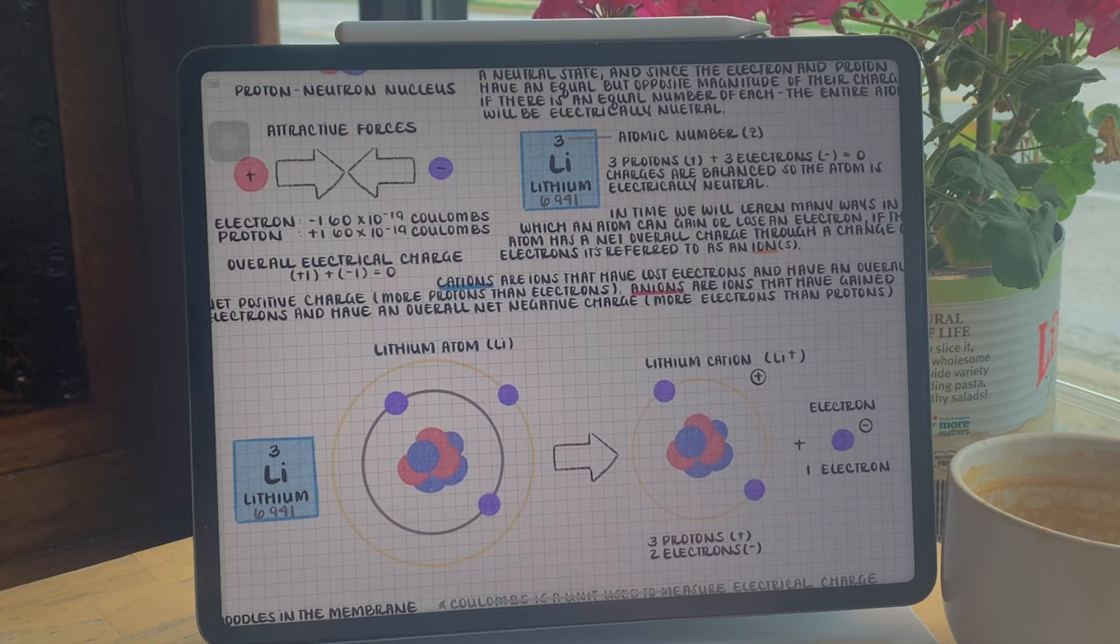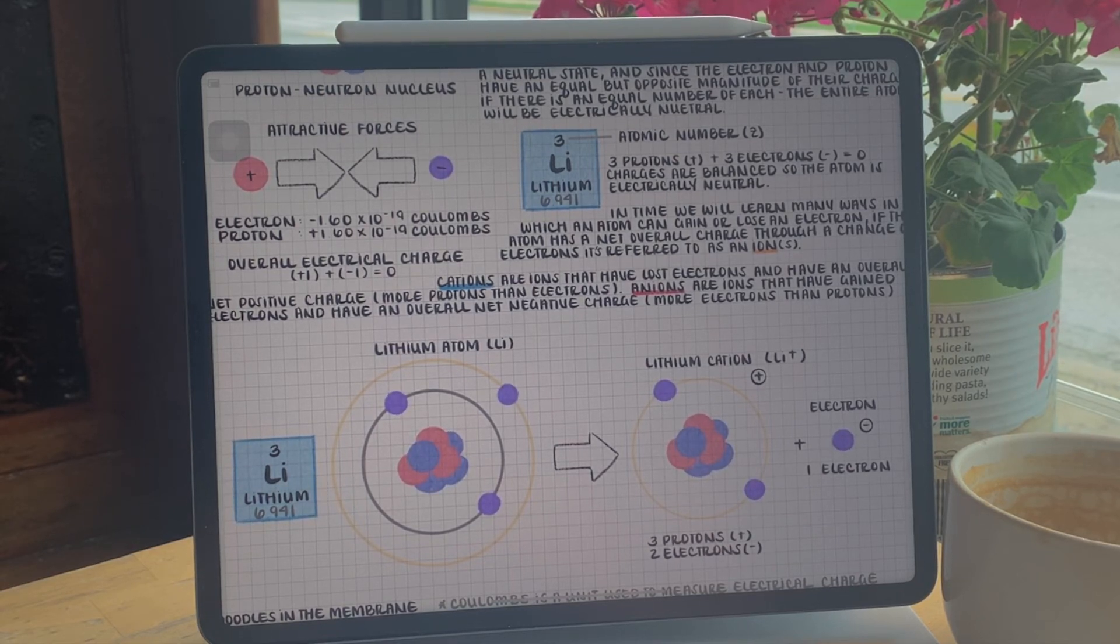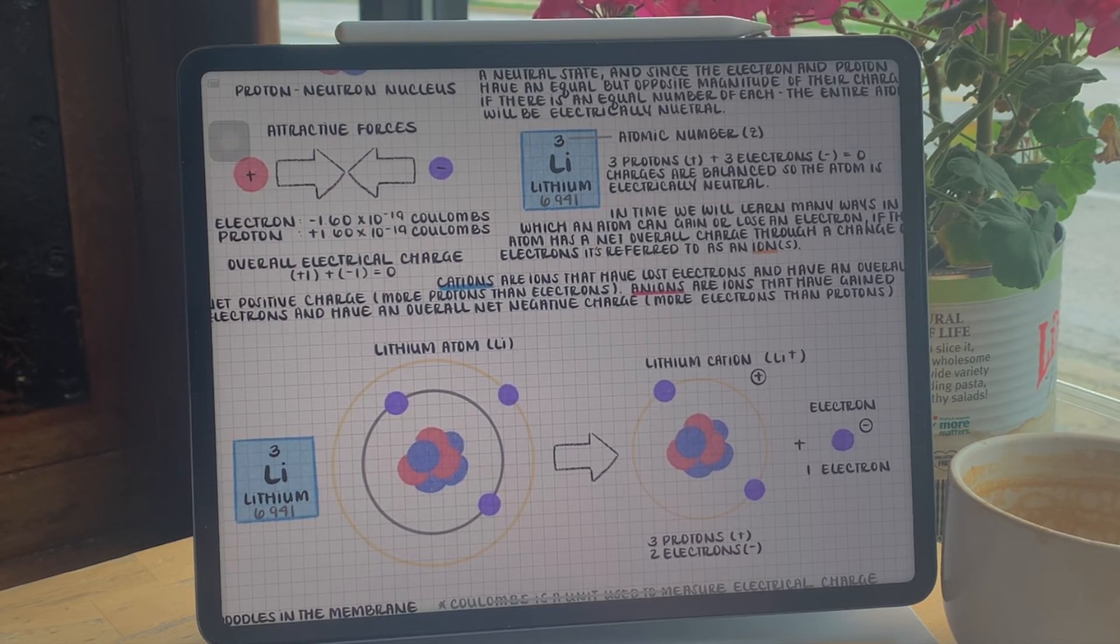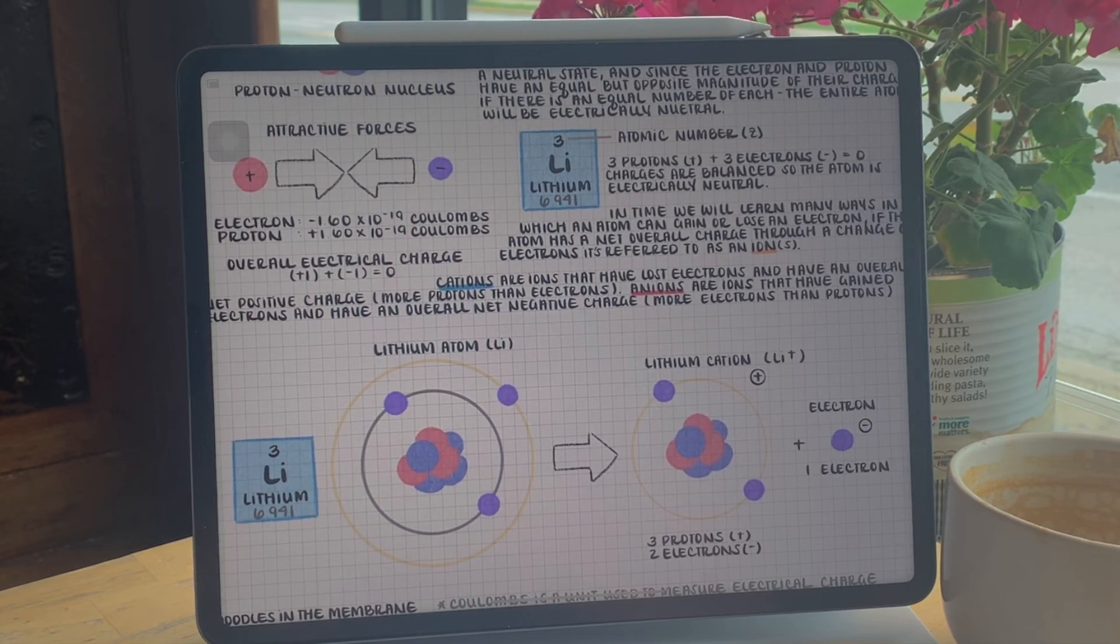For example, let's look at lithium again. In this case, lithium is going to lose an electron and become a lithium cation. Now it only has two electrons but three protons for an overall positive charge.